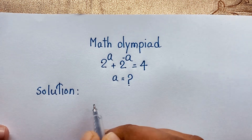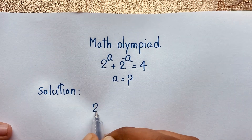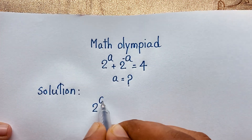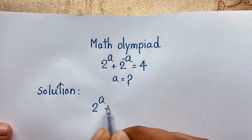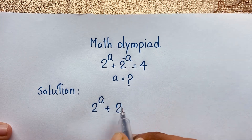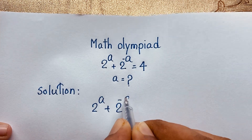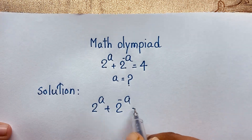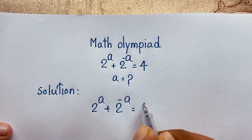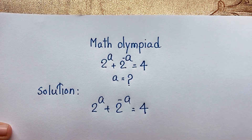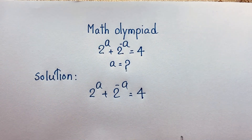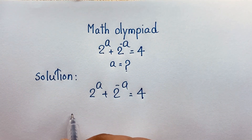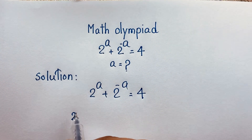Our question is 2 to the power a plus 2 to the power minus a is equal to 4. First of all, I multiply both sides by 2 to the power a.